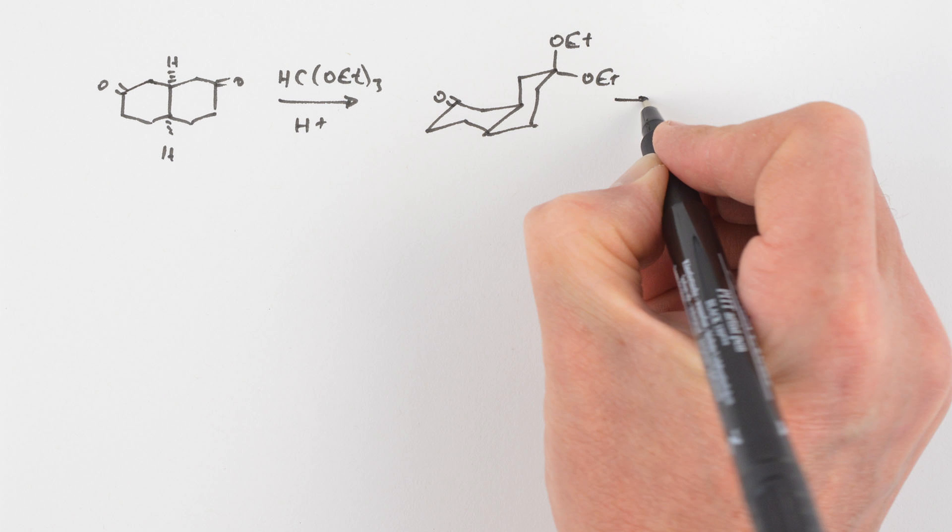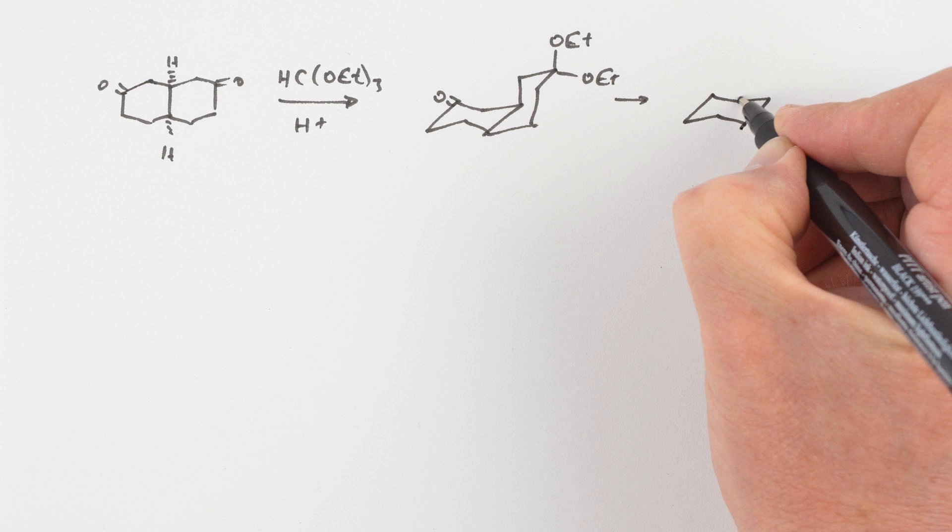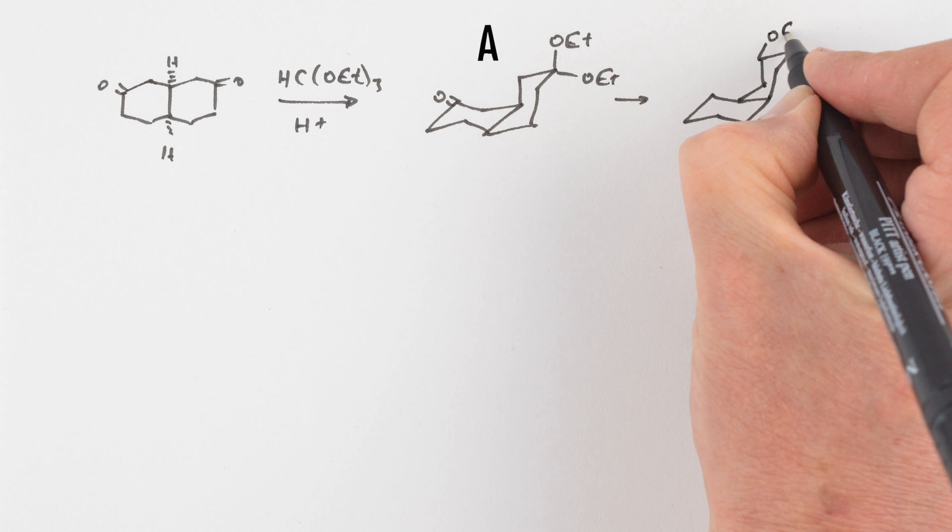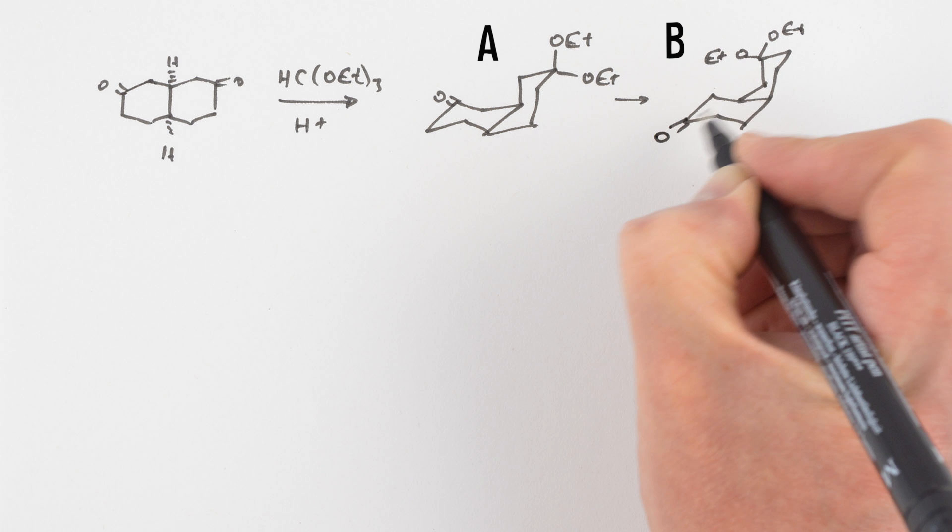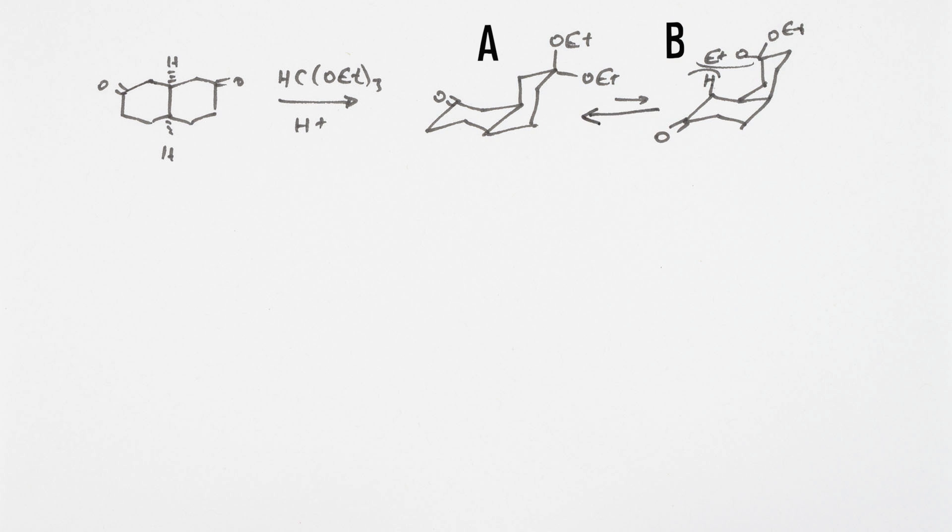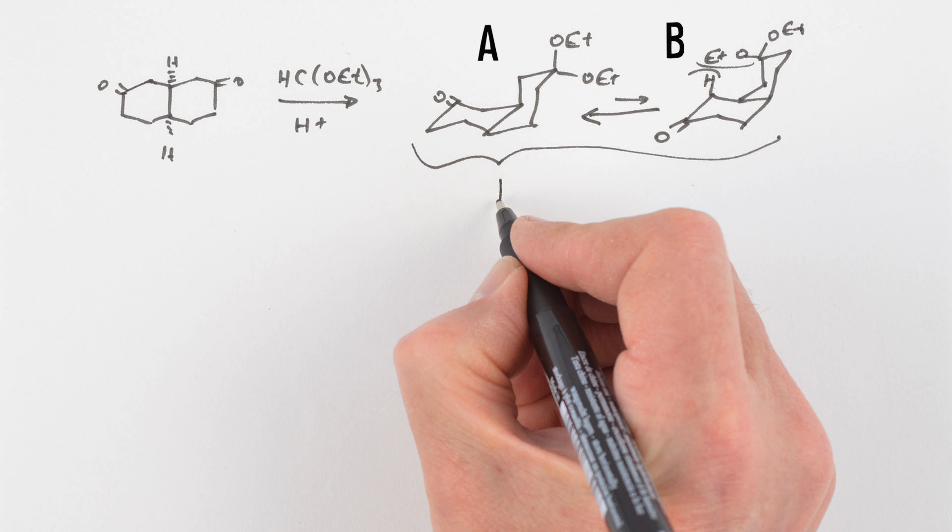This could exist in two possible cis-decaline conformations A and B. Confirmation B has an axial ethoxy group, and hence the equilibrium favors A.